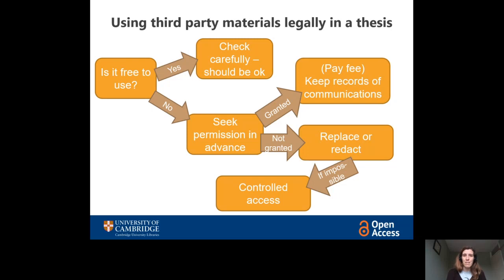In some cases that just doesn't make sense — take, for instance, a history of art thesis with all the images redacted; it would be very hard to read. So if it's impossible to replace or redact all the third-party content, then you might have to go for controlled access. That means your thesis will not be available online, but because of that it doesn't count as published, and therefore there aren't these restrictions on using third-party copyright materials. The thesis will still be requestable — people can automatically email the library and request it for their private study, but they have to sign a waiver, which means it's not the same as publishing it.